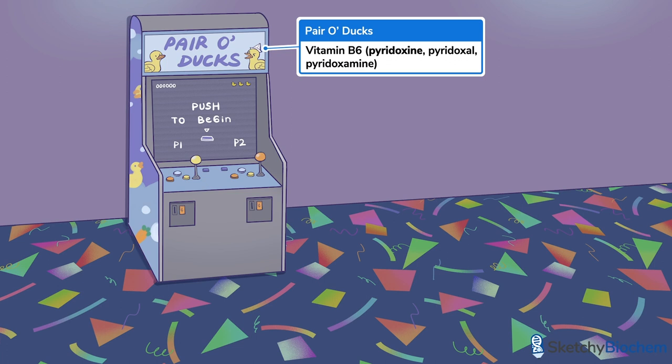PLP plays a huge role during amino acid metabolism. In fact, PLP is a cofactor for at least 140 enzymes. Thankfully, you don't need to remember all of them, and we'll walk through the ones you should know.